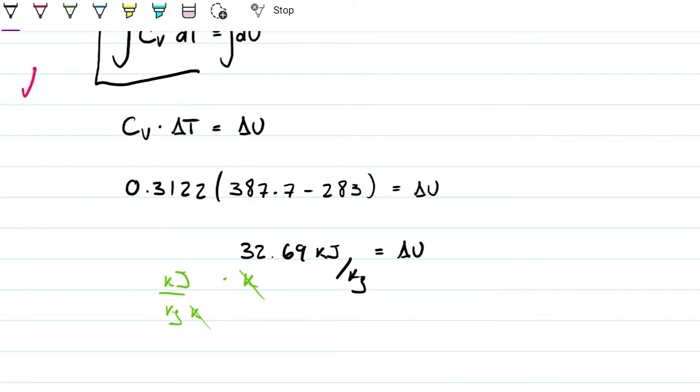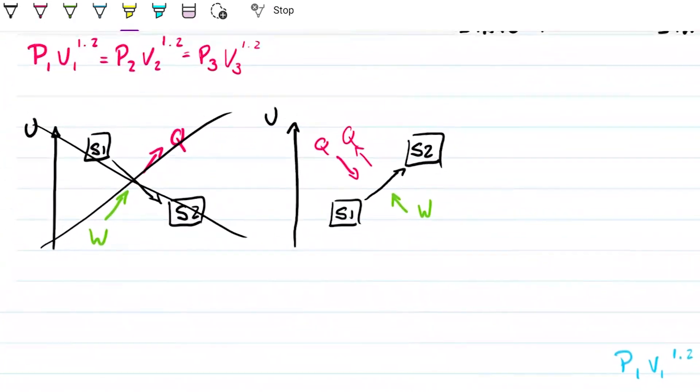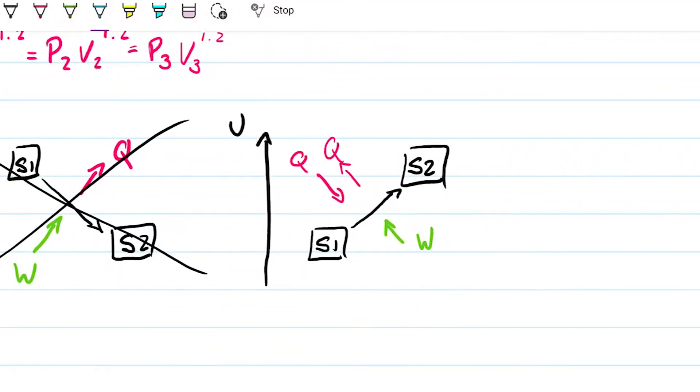32.69 kilojoules per kilogram, and that allows us lowercase delta u. That now allows us to complete our analysis finally, because now I know exactly the amount of internal energy by which my argon is increasing as it's receiving the work, and it's 32.69. So here we are again, we are giving 108 over here and this guy here is increasing its internal energy by 32.